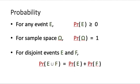The first property is: no matter what event E you are talking about, the probability Pr(E) is always a real number greater than or equal to zero. For the sample space, we use omega (Ω) to represent it, since 'omega' has the same first sound as 'outcomes'. The sample space itself is also an event, and Pr(Ω) is defined to be equal to 1. The third property is: for any disjoint events E and F, Pr(E ∪ F) must equal Pr(E) plus Pr(F).